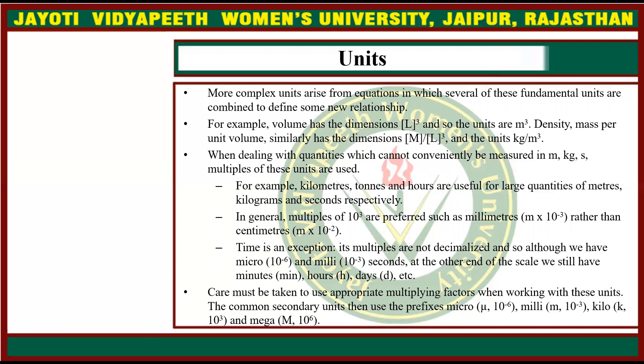This is an exception: time's multiples are not decimalized. So although we have micro (10 to the power minus 6) and milli (10 to the power minus 3) seconds, at the other end of the scale we still have minutes, hours, days, etc. Care must be taken to use the appropriate multiplying factor when working with these units. The common secondary units use prefixes like micro, milli, kilo, and mega.